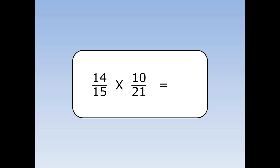14 fifteenths times 10 twenty-firsts. 7 divides into 14, and it also divides into 21. So divide them both by 7. 14 divided by 7 is 2. 21 divided by 7 is 3. Now 10 and 15 both divide by 5, so I'm going to divide both of these by 5. 10 divided by 5 is 2. 15 divided by 5 is 3. And I continue as before. 2 times 2 is 4. 3 times 3 is 9.